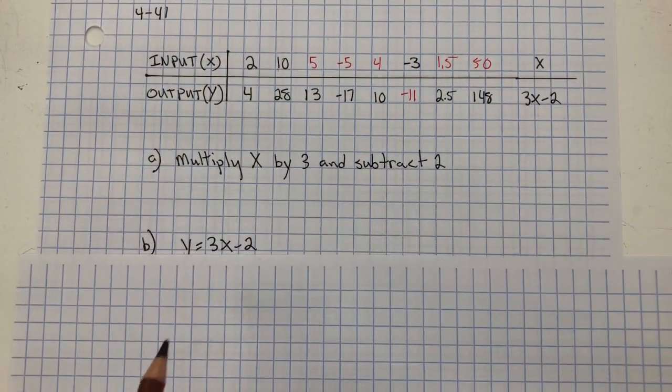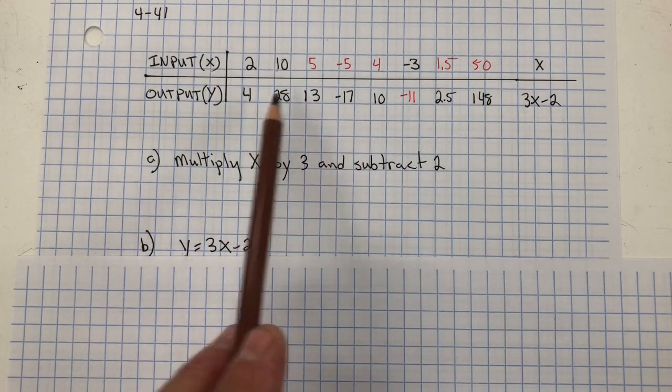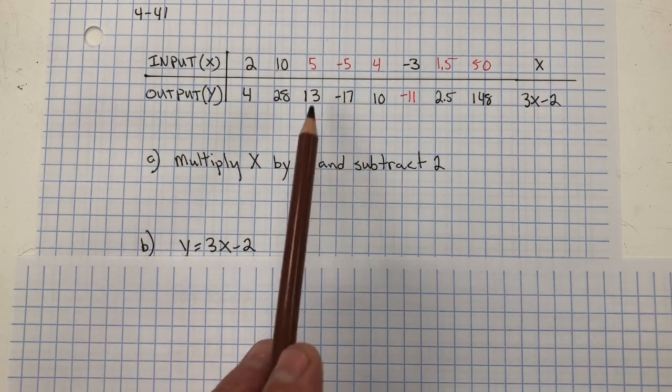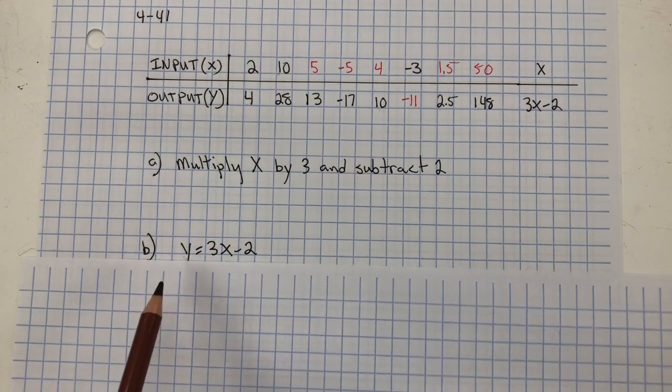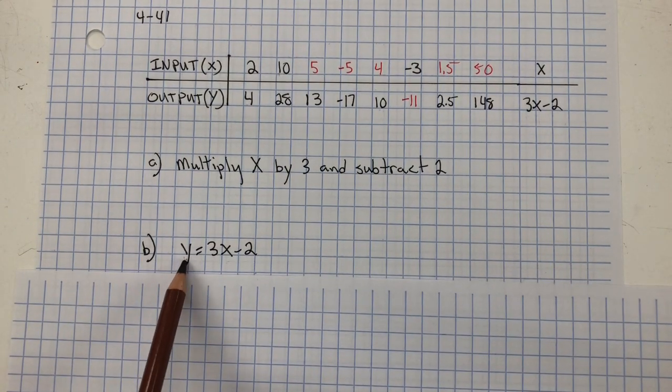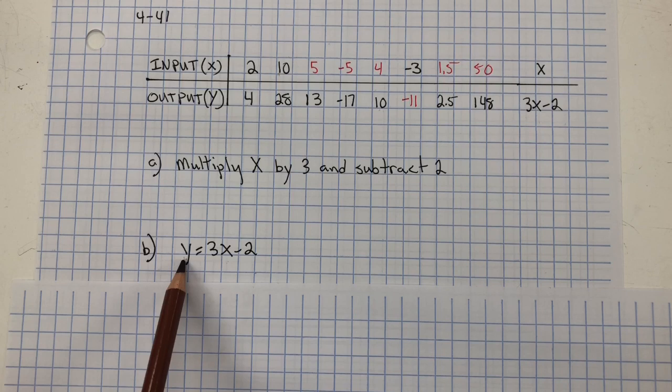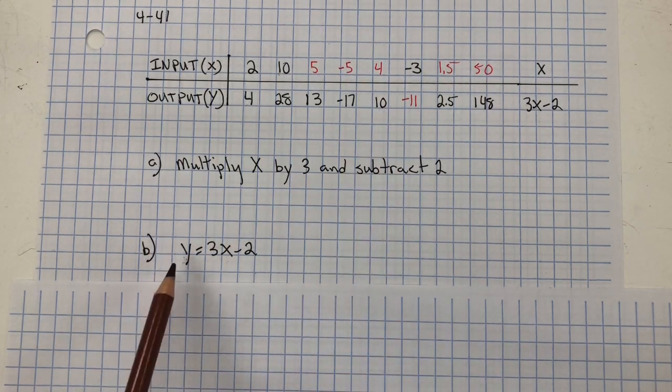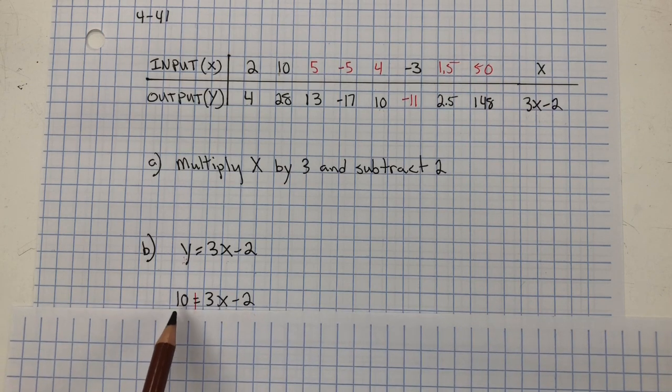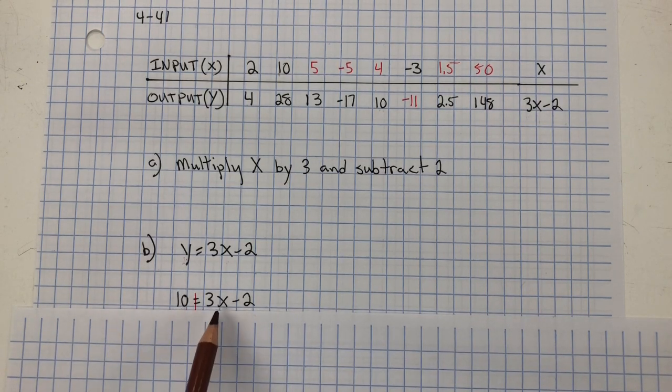Now, in order to find the input values, you need to take the output value Y and substitute it into your equation. So, I used the value of 10 for my output value. So, instead of Y, it's 10. And now we're going to solve for the input, which is X.